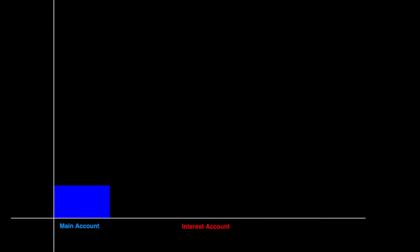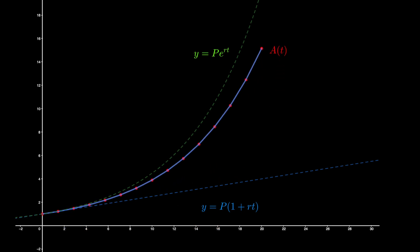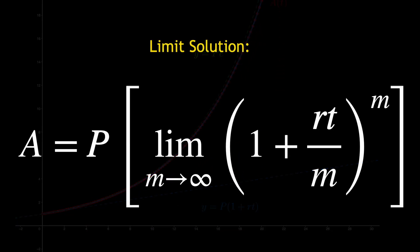Compounding in discrete time intervals without paying attention to interest degree leads to the limit definition of E to the X.